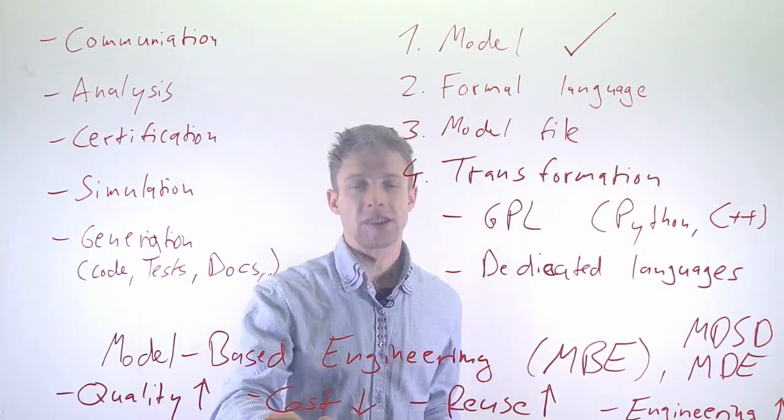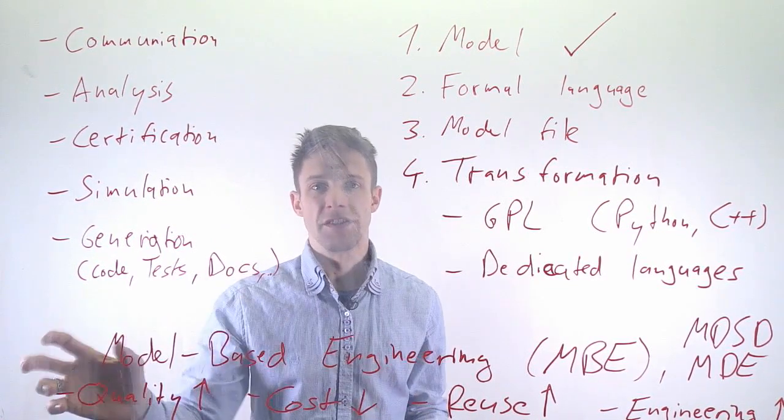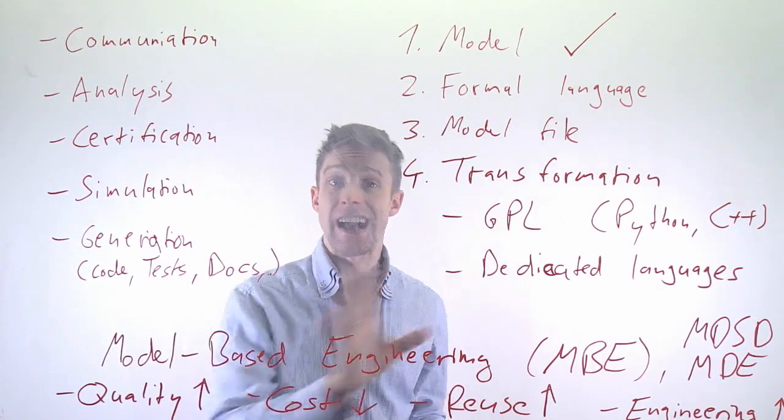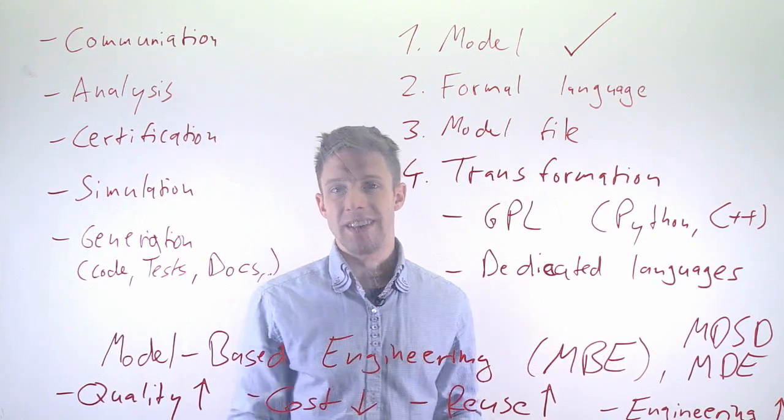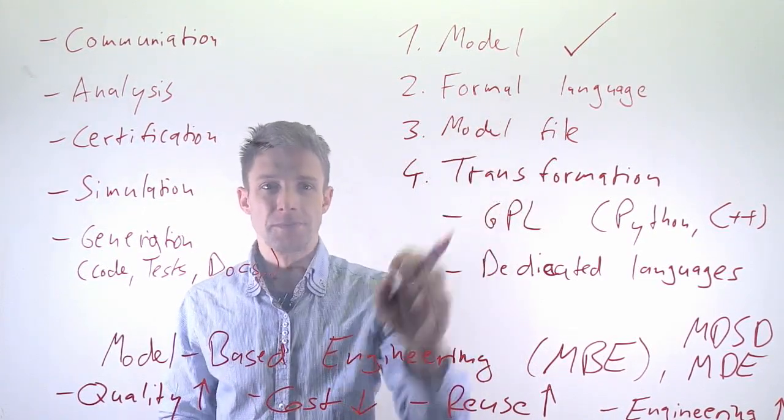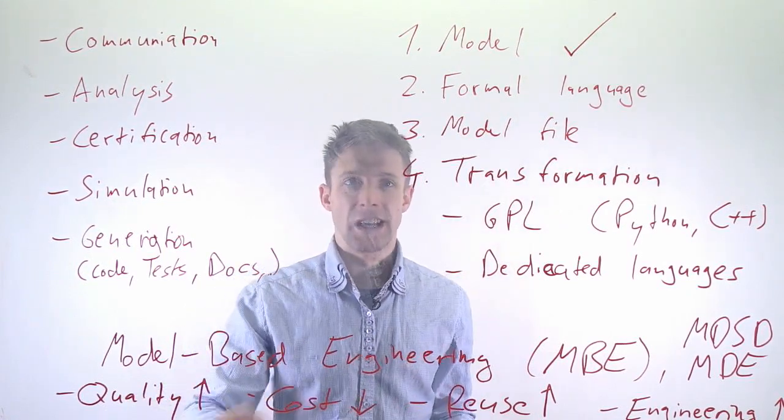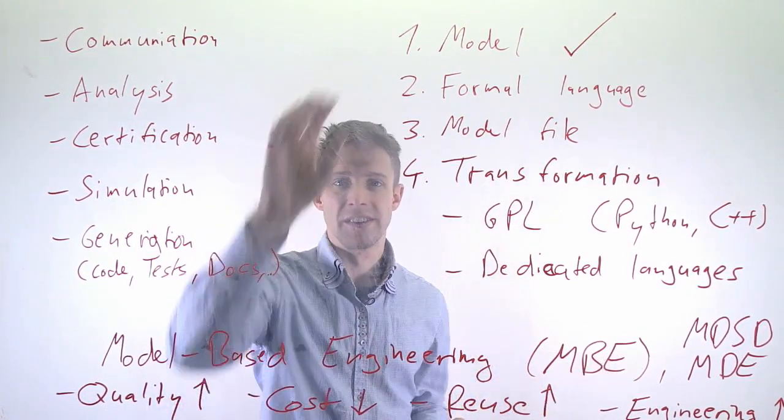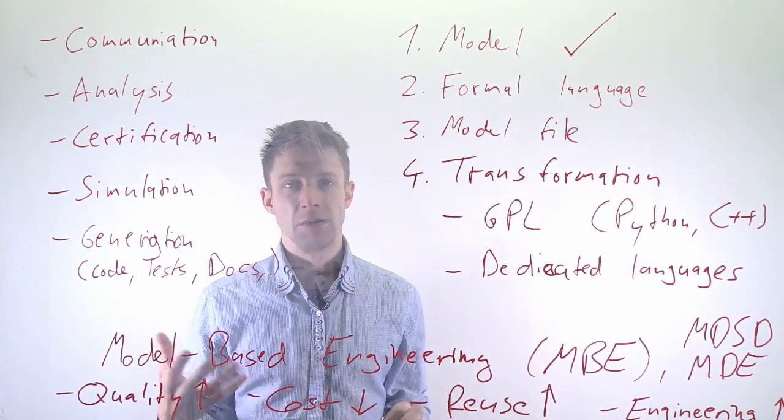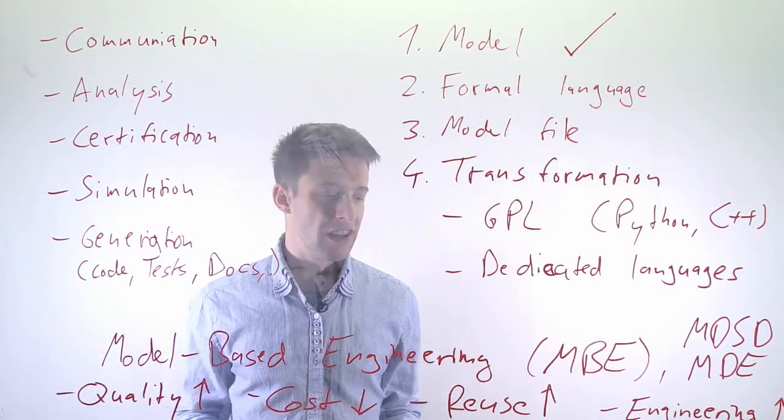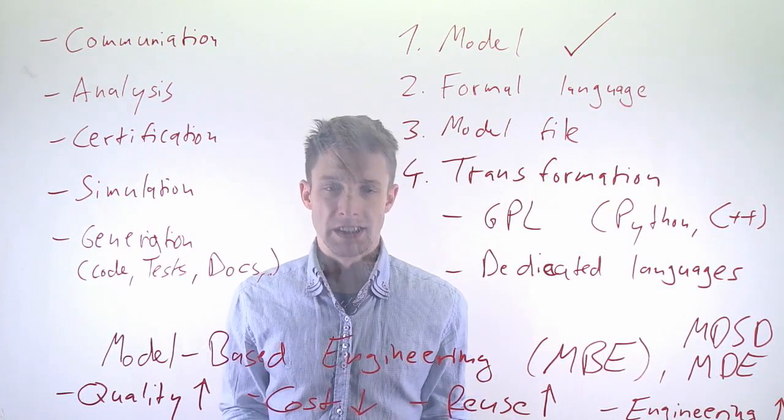And the idea is basically the costs are reduced because you can generate things automatically, because you can reuse the model for several purposes. For example, you could generate tests and documentation from the same model. You don't have to write it. You only have to maintain the transformations and the models, but you can generate a lot of things out of it. The quality goes up because you have a separation of concerns. You can focus on the model. You can focus on the transformation. And if you, for example, have tested your transformation well enough, then there will be less bugs in the development. And that's essentially the reasoning around why we want to do model-based engineering.